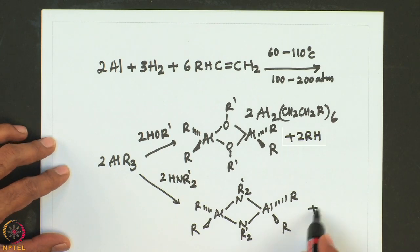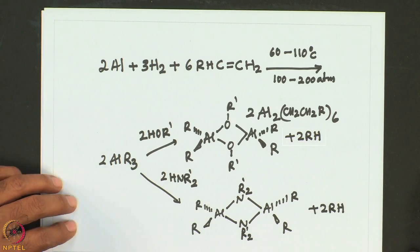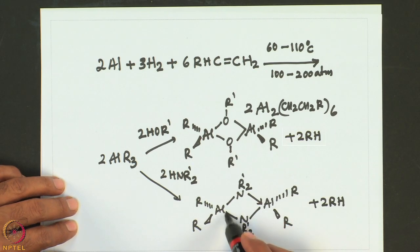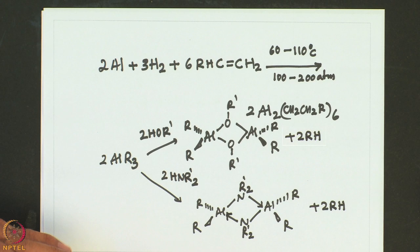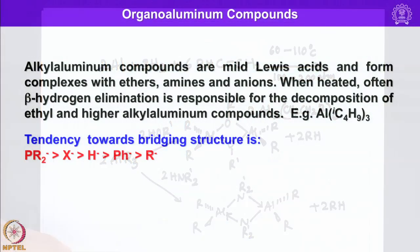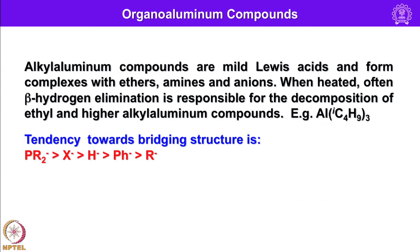The products include 2 RH. One should remember that one of these bonds will be a coordinate bond. Alkyl aluminum compounds are mild Lewis acids and form complexes with ethers, amines, and anions. When heated, beta-hydrogen elimination is often responsible for the decomposition of ethyl and higher alkyl aluminum compounds. The tendency towards bridging structure follows the sequence shown.